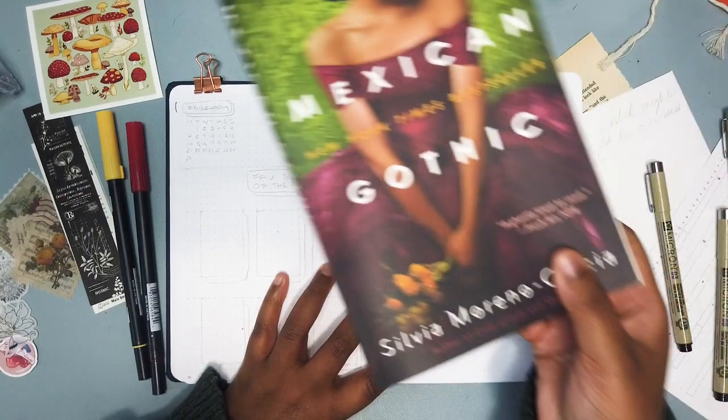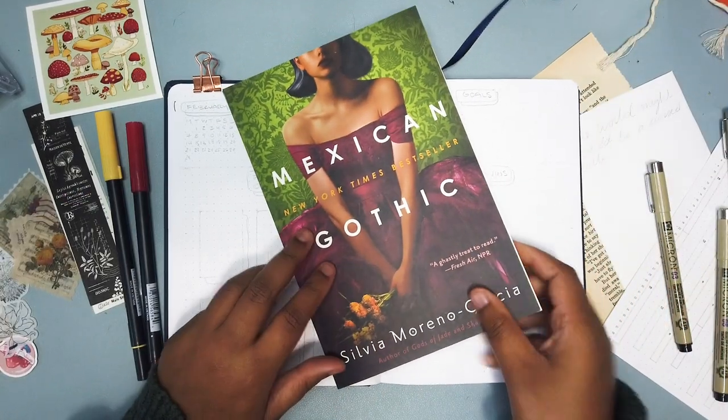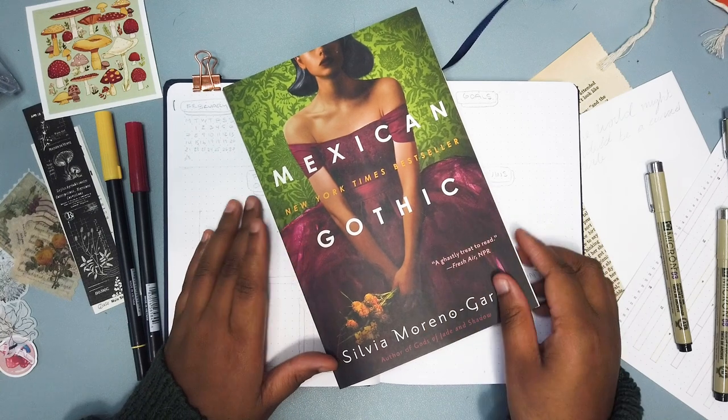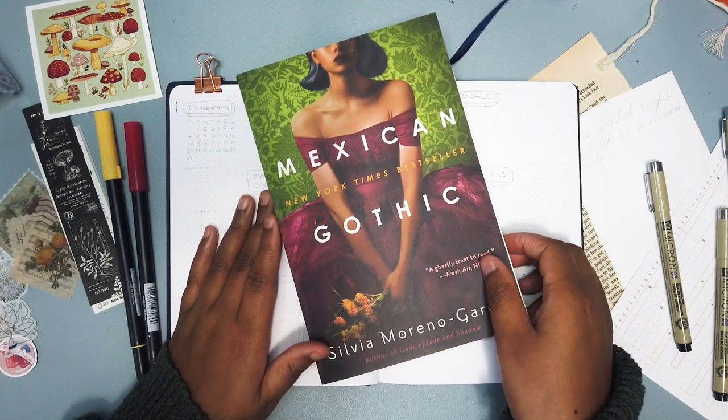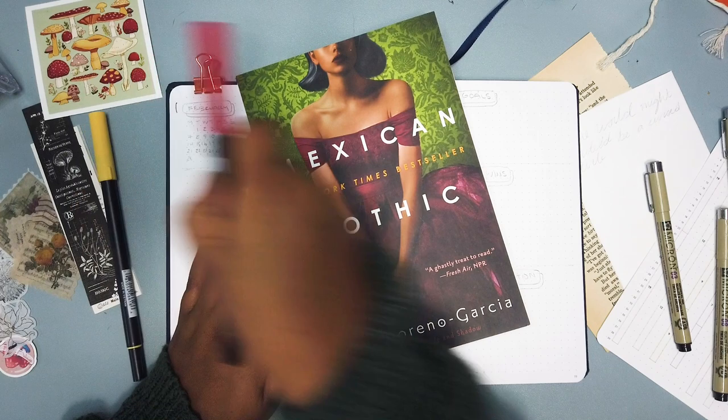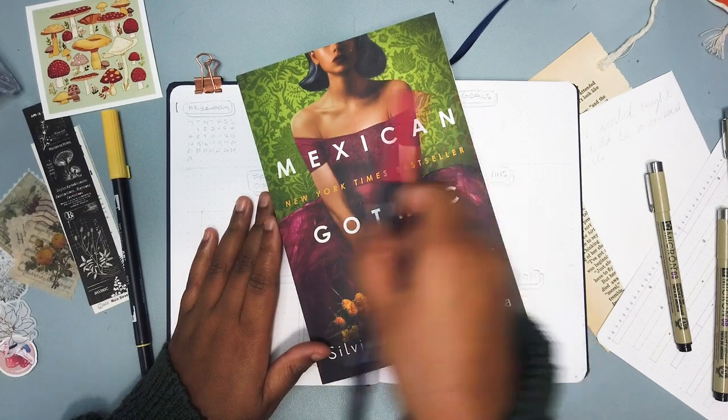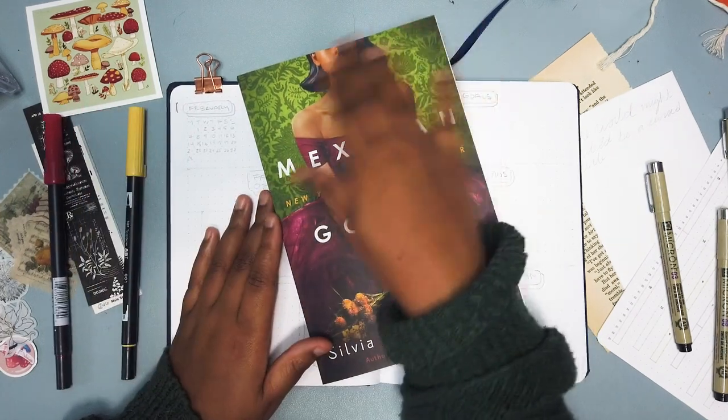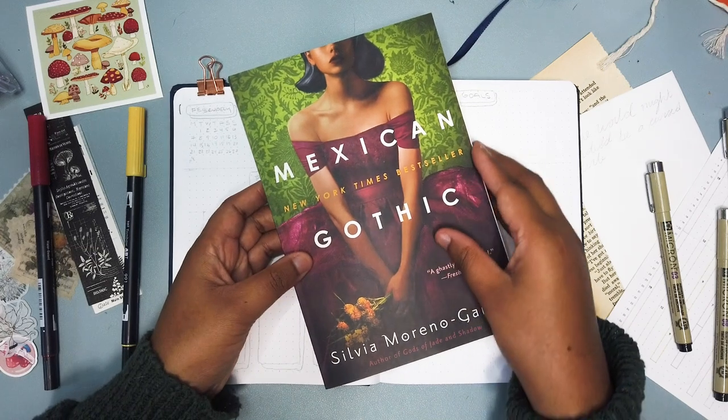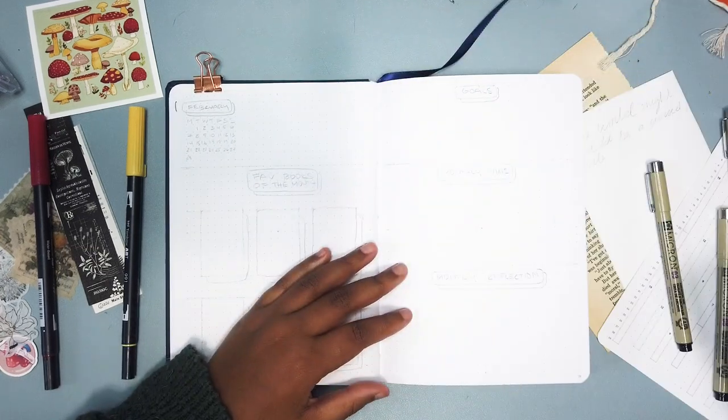Now I'm on to February. I'm doing a Mexican Gothic theme which essentially means I'm finding a way to use up a lot of the mushroom stickers that I have because if you know, you know.